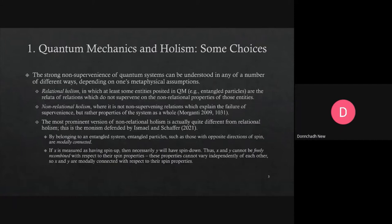Our starting point is the well-known idea of the non-supervenience of quantum systems. I'm going to go through the first section quite quickly. I'm assuming we're all familiar with the basic idea of the non-supervenience of quantum systems, and this has prompted a number of different ways of accounting for the metaphysics of this fact. These include relational holism of various sorts, and there's also non-relational holisms. This is similar to the type of distinction that Matteo outlined in his top-list and monist views.